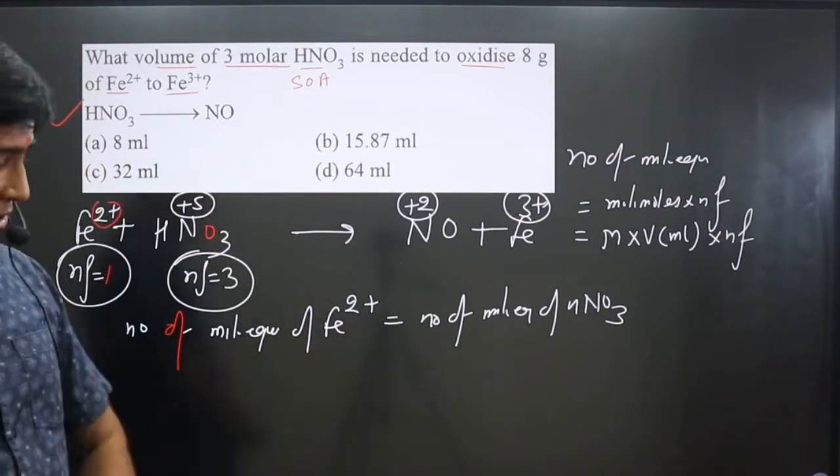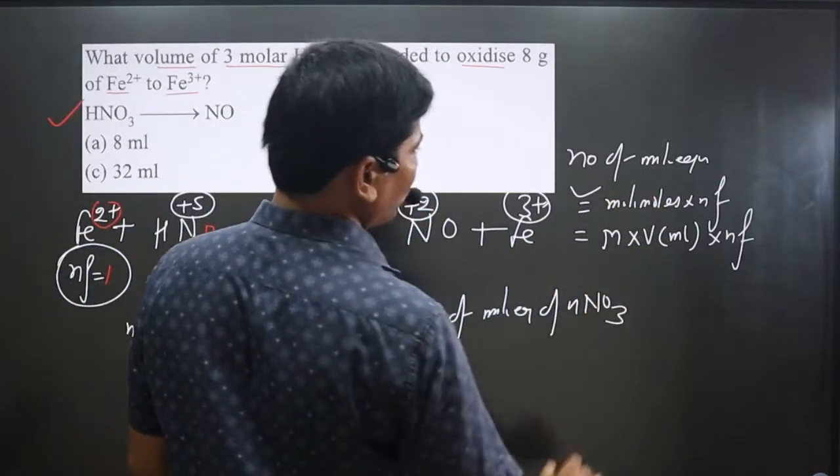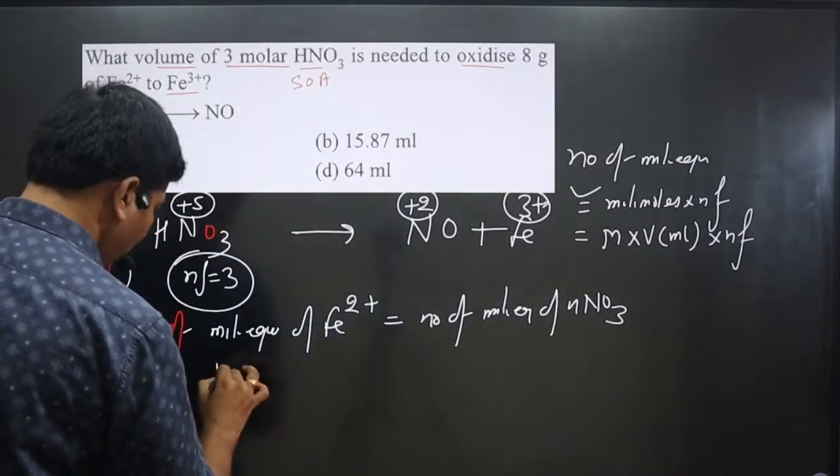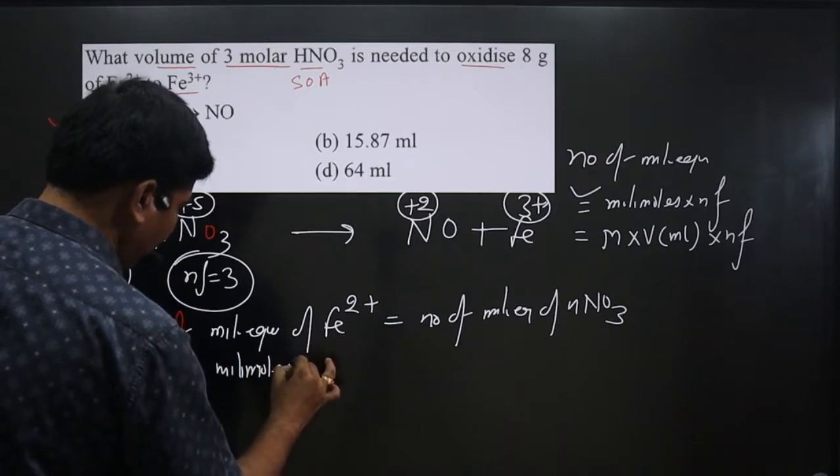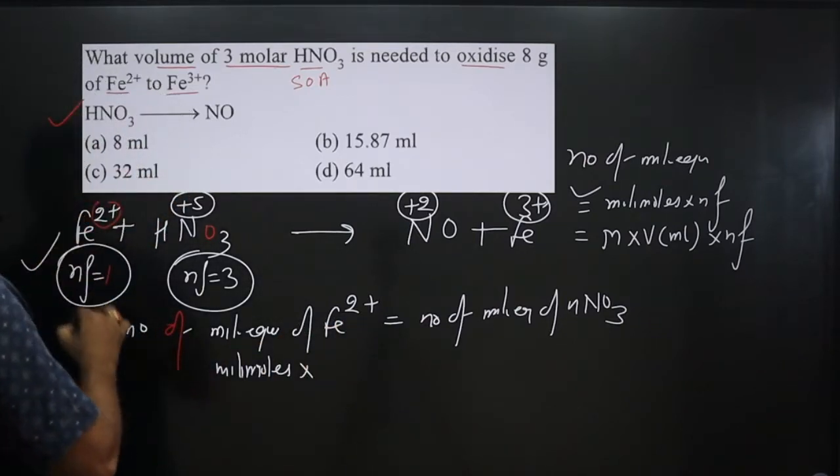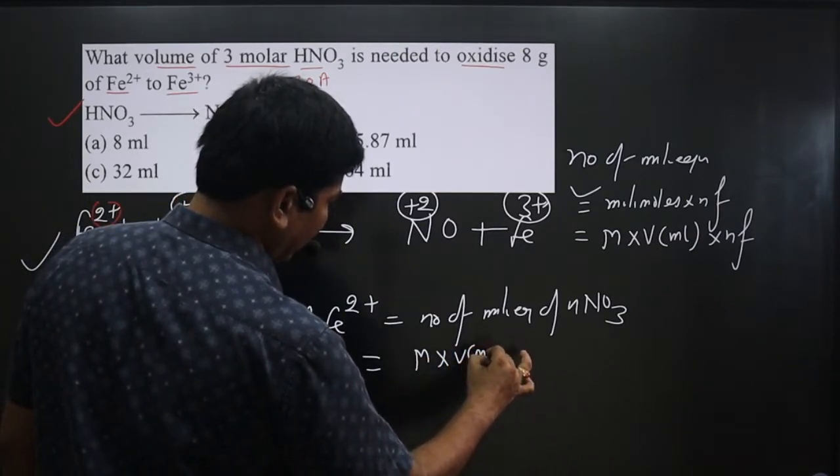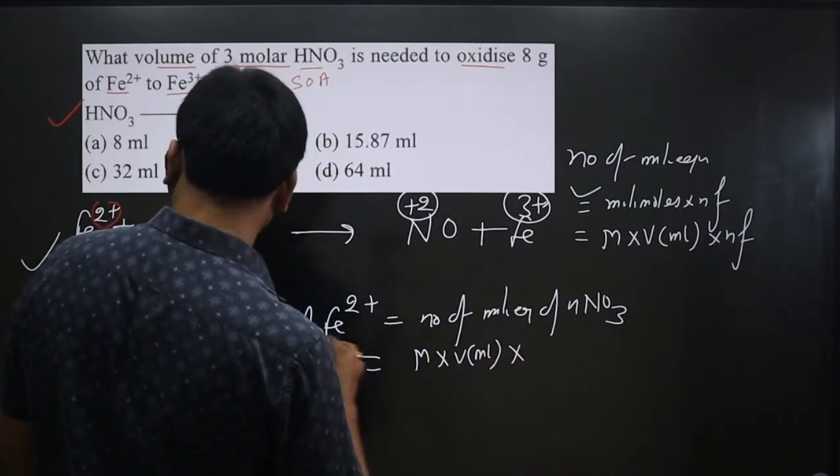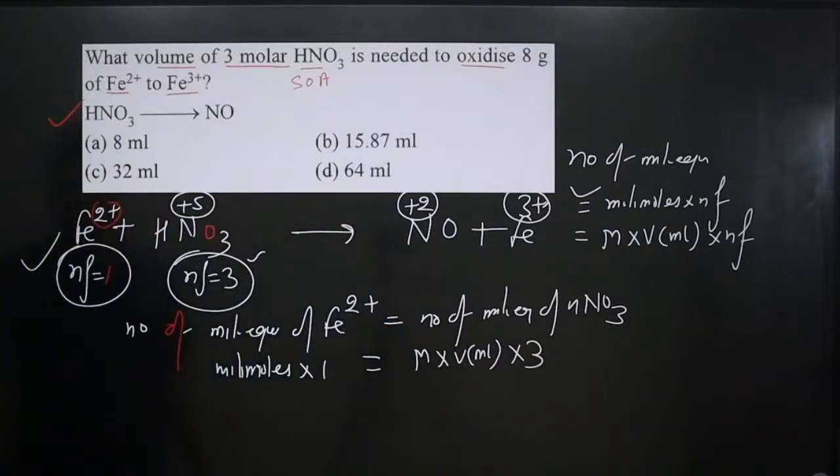In case of milliequivalents of Fe²⁺, I will apply this formula: millimoles multiplied by n-factor. Fe²⁺, what is the n-factor value? 1. Other side, we have molarity multiplied by volume in mL. And in this case, n-factor value is 3 for HNO₃. We start plugging in the values.